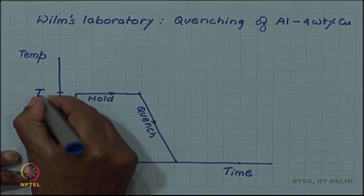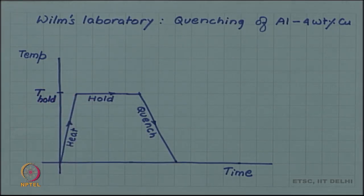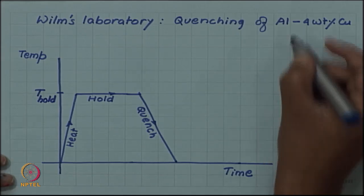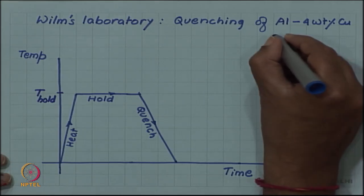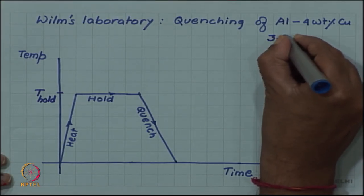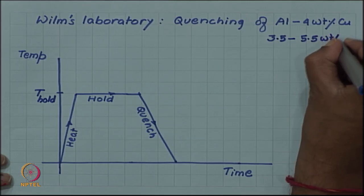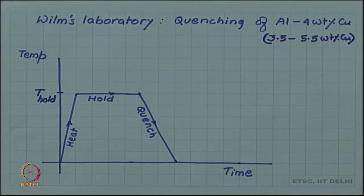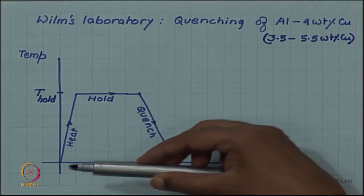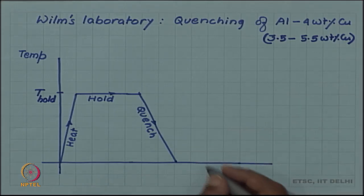This is the temperature for holding. He made a range of aluminum alloy in particular aluminum 4 weight percent copper alloy. The copper percentage actually he tried from anywhere from 3.5 to 5.5 weight percent copper. He made several alloys and then he attempted this heat treatment, heat hold and quench and then measure the hardness.